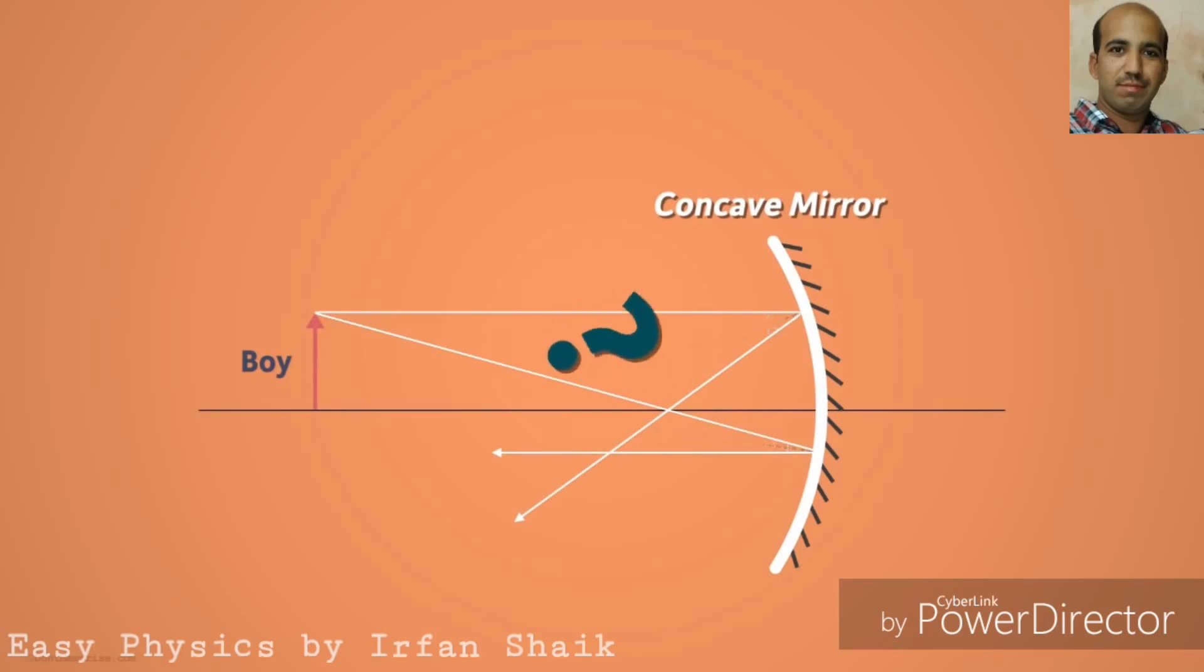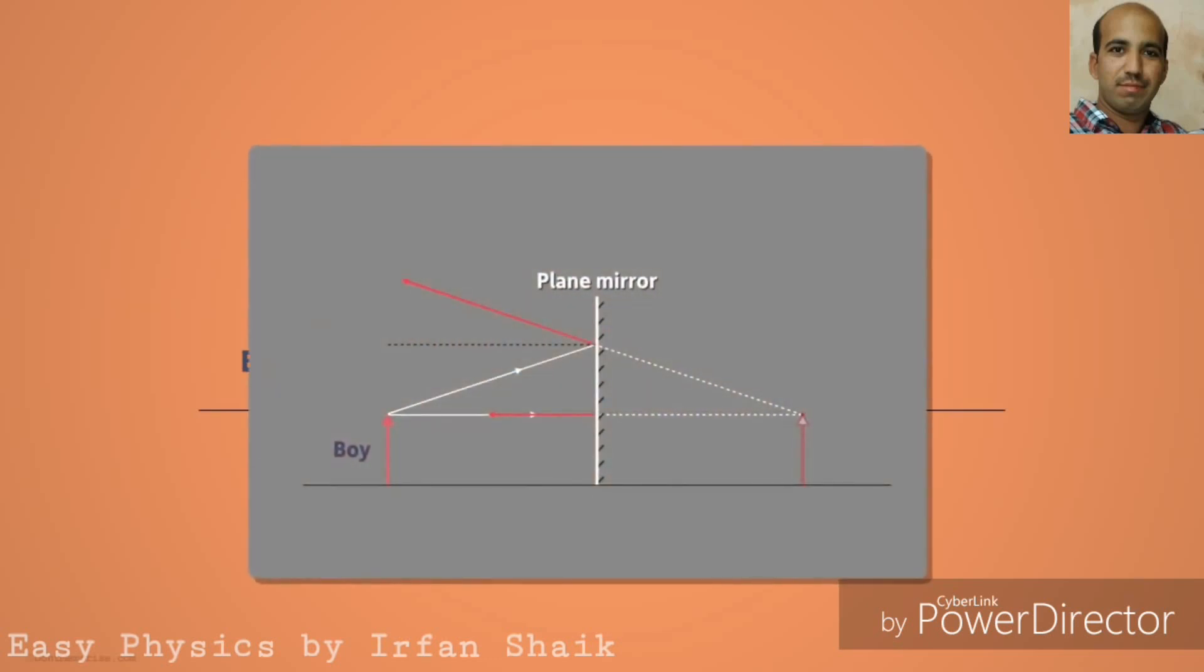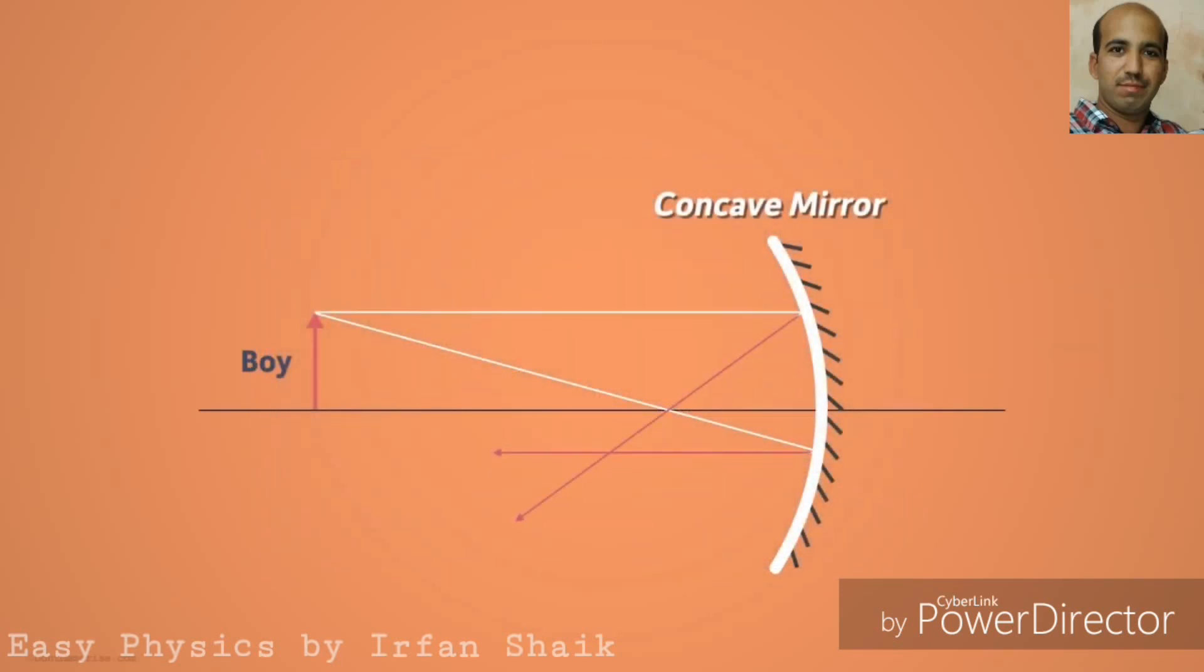Let's try to know the difference between the reflection of plane mirror and concave mirror. In plane mirror, all reflected rays are diverging, but in concave mirror all the reflected rays are converging at a point.